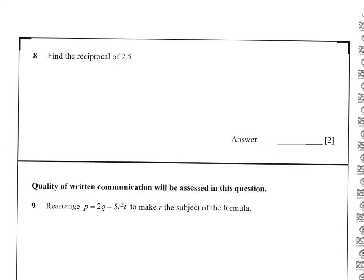So for a reciprocal, we write it as a fraction. So that's 2 and a half, which is 5 over 2, and the reciprocal is the inverse, so it's 2 fifths.